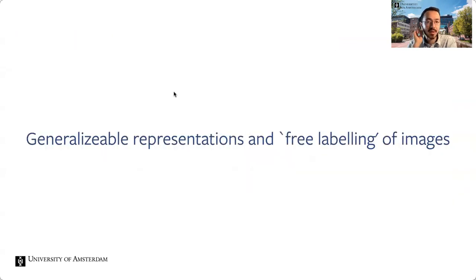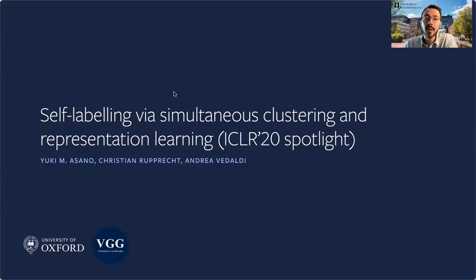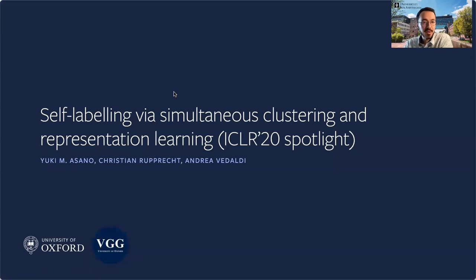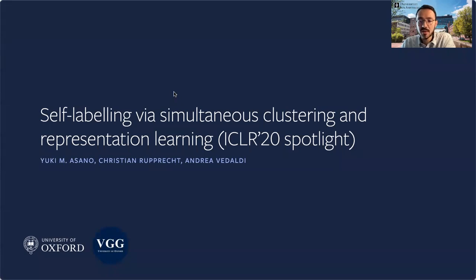In this work we talk about self-supervised representation learning methods which also yield pseudo-labels for a dataset for free. It's called Self-Labeling via Simultaneous Clustering and Representation Learning, presented at ICLR 2020 as a spotlight. We introduce a novel loss that can be used for both clustering and representation learning, and it is currently used in a slightly modified version by Facebook's SwAV model and also the DINO model.